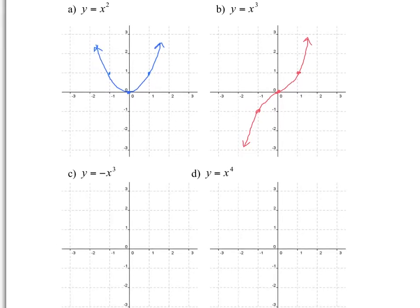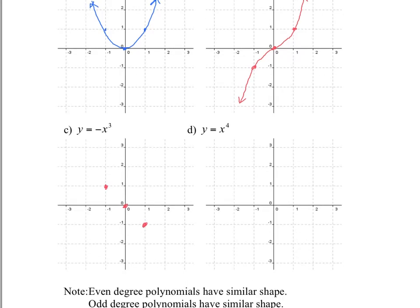Now, what happens when we change the coefficient in front? We've seen negative x squared goes toward the bottom. For negative x cubed, you flip both positive and negative: the positive becomes negative and the negative becomes positive. So when you plug in negative one you get positive one, and when you plug in one you get negative one — exactly the same shape but reflected over the x-axis.